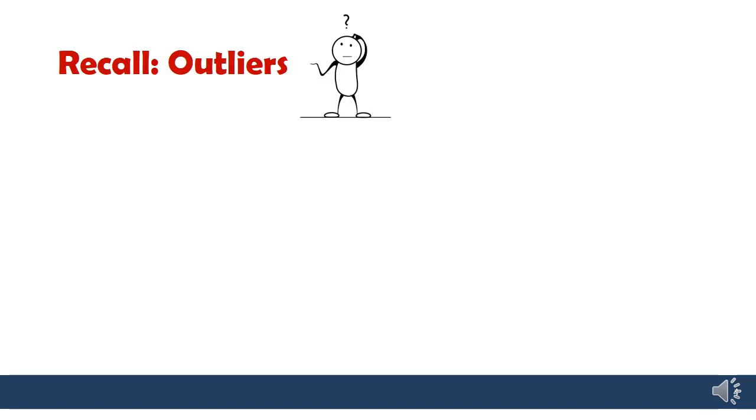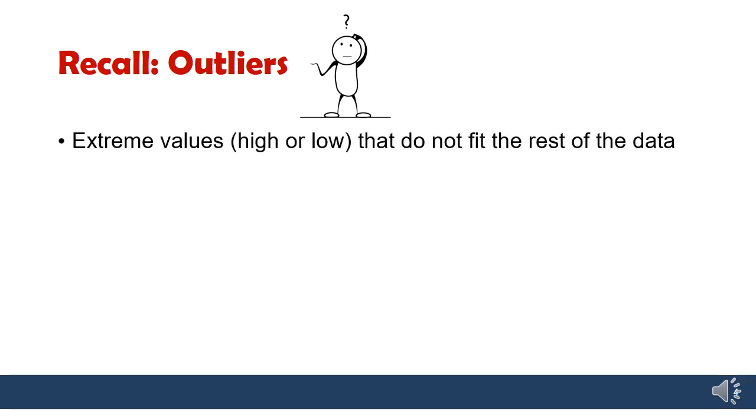What an outlier is? You learned about it in grade 9. An outlier is any extreme value. It could be really high or it could be really low, but it literally lies outside of the normal pattern of the data. So it doesn't fit in with the rest.